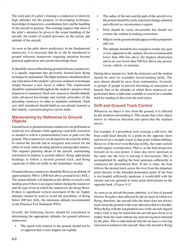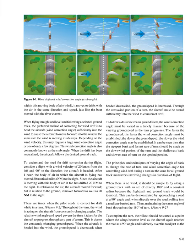As soon as an aircraft becomes airborne, it is free of ground friction. Its path is then affected by the air mass in which it is flying. Therefore, the aircraft, like the boat, does not always track along the ground in the exact direction that it is headed. When flying with the longitudinal axis of the aircraft aligned with a road, it may be noted that the aircraft gets closer to or farther from the road without any turn having been initiated by the pilot. This would indicate that the air mass is moving sideward in relation to the aircraft. Since the aircraft is flying within this moving body of air — wind — it moves or drifts with the air in the same direction and speed, just like the boat moved with the river current.